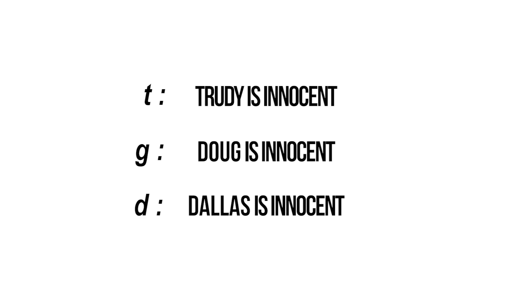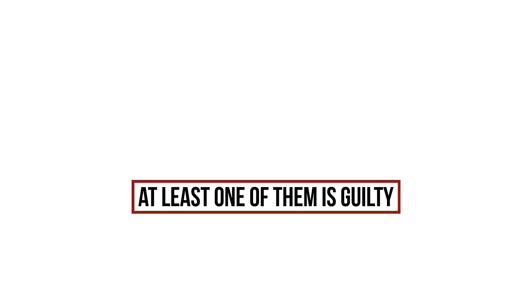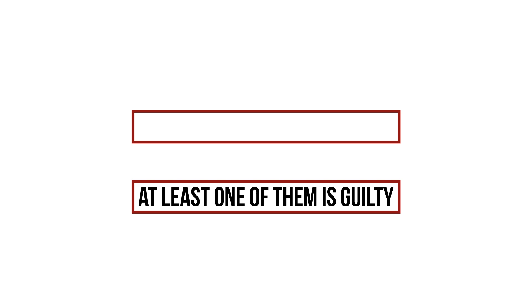We want to find out if these propositions logically follow from the information we have — that is, if they are valid conclusions given our premises. At least one of them is guilty. This is our first premise. We translate this into propositional logic by expressing that either Trudy is guilty, or Doug is guilty, or Dallas is guilty. To make this a well-formed formula, we add some brackets.